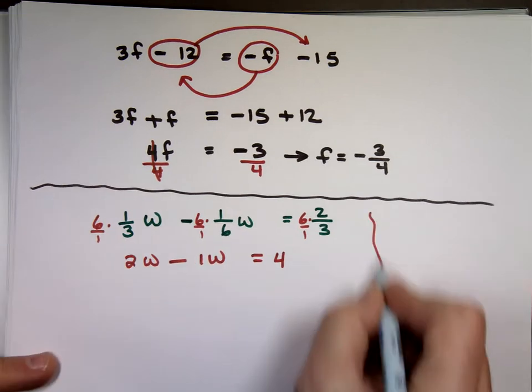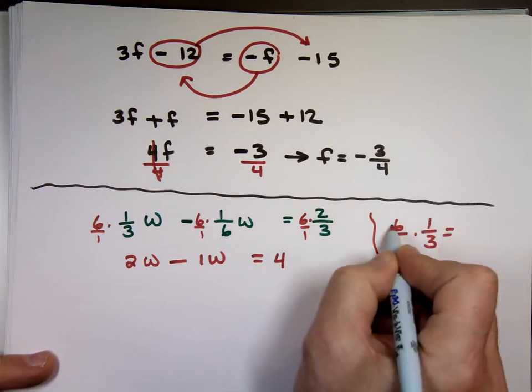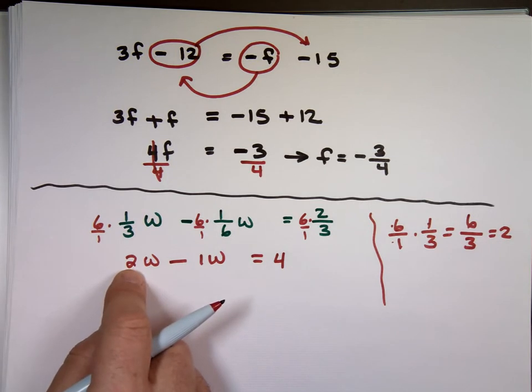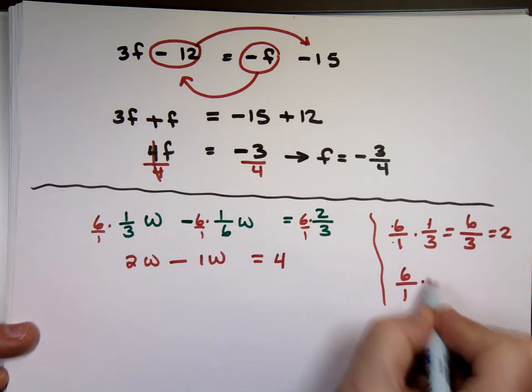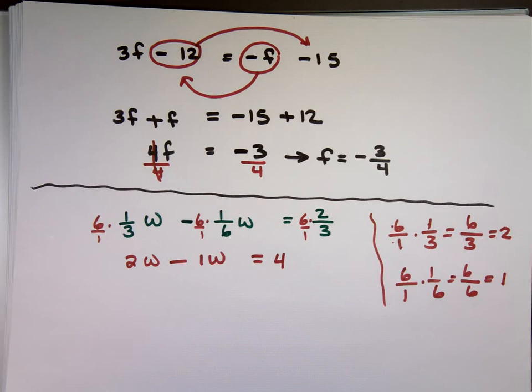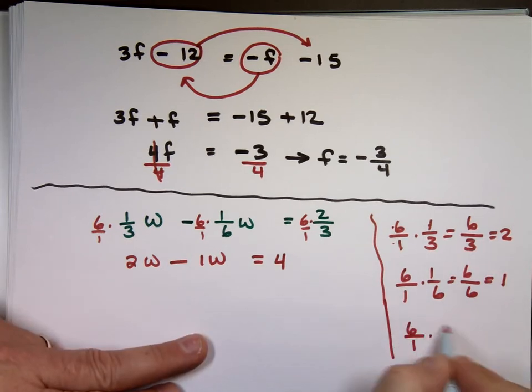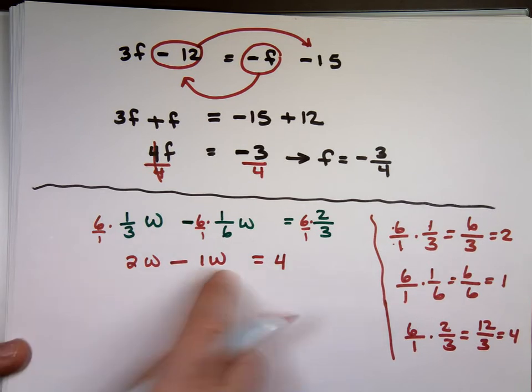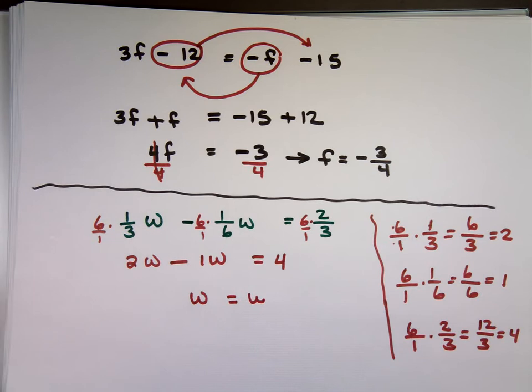Again, if I multiply that too quick for you, goes 6 over 1 times 1 over 3. 6 times 1? 6. 1 times 3 is 3. What's 6 over 3? 2. That's where that 2 came from. The next one. 6 over 1 times 1 over 6. 6 times 1 is 6. 1 times 6 is 6. 6 over 6 is 1. That's where the 1 came from. And the last one. 6 over 1 times 2 over 3. 6 times 2? 12. 1 times 3 is 3. 12 over 3, which is 4. And that's where the 4 came from. So now, what's 2W minus W or 1W? W. W equals what? 4. W equals 4. And that's the solution.